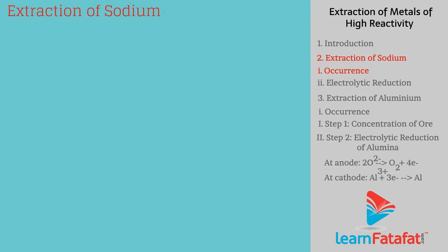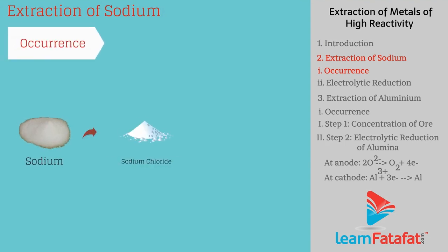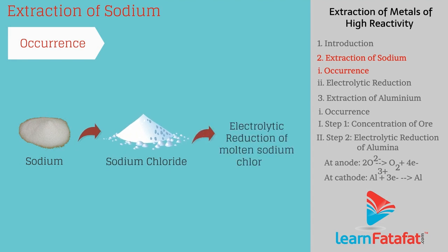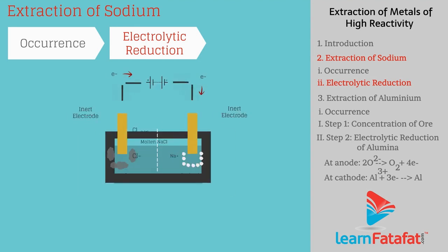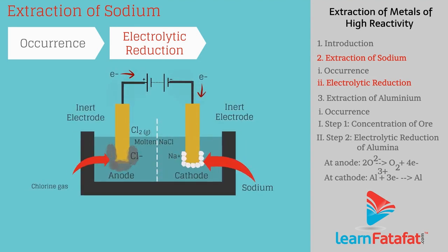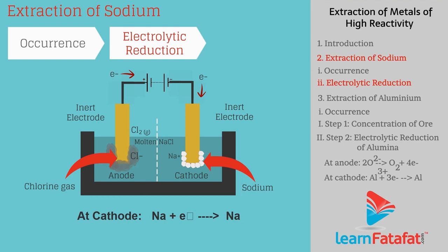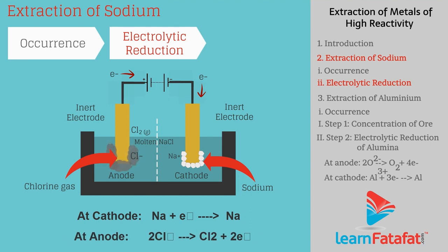Extraction of sodium. Sodium can be obtained from sodium chloride by electrolytic reduction of molten sodium chloride. During electrolysis, sodium is deposited at the cathode and chlorine is liberated at the anode. At cathode: Na⁺ + e⁻ → Na. At anode: 2Cl⁻ → Cl₂ + 2e⁻.